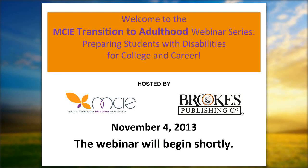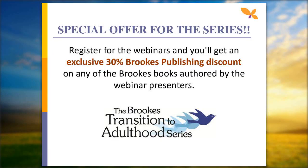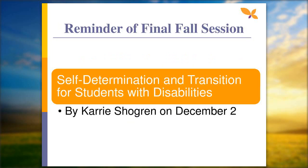Good afternoon. Welcome to MCIE's Transition to Adulthood Fall Webinar Series, co-sponsored by Brooks Publishing. I'm Barb Gruber from MCIE, and I'll be your facilitator. There's a special 30% discount on Brooks books authored by the webinar presenters, including Teresa Grossi, David Test, and Carrie Sjogren. Our final webinar in the series is with Carrie Sjogren on December 2nd, talking about self-determination and transition for students with disabilities.